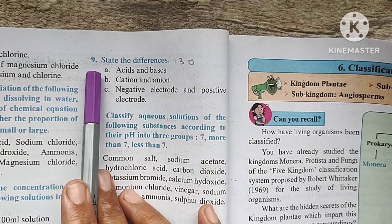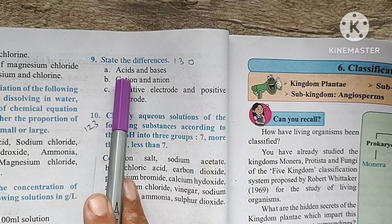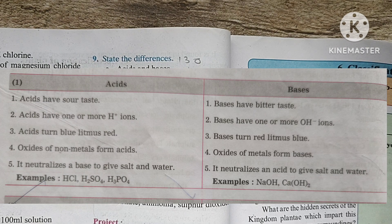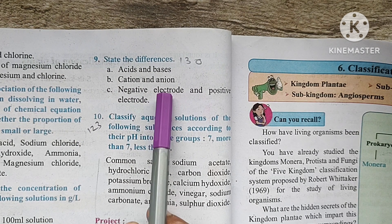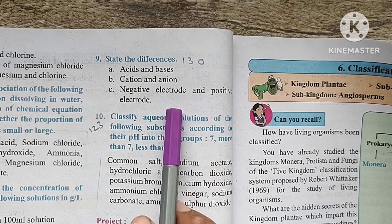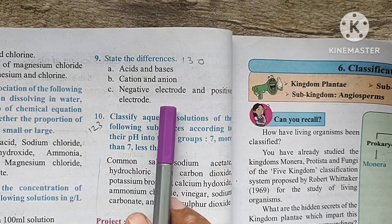Question No. 9: State the difference. Part A: Acid and bases, I will write. Part B: Cations and anions, I will write. Part C: Negative electrode and positive electrode, I will write.